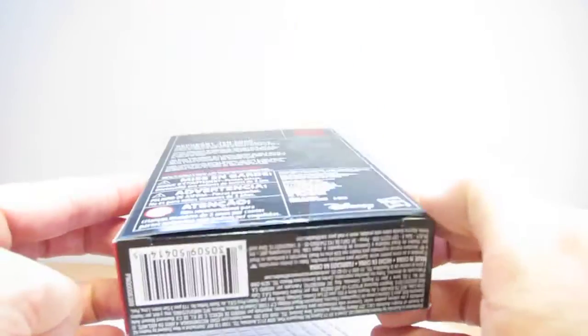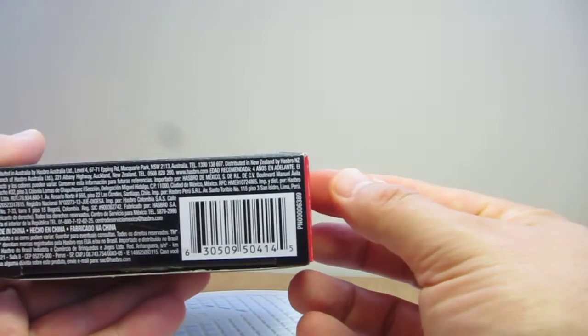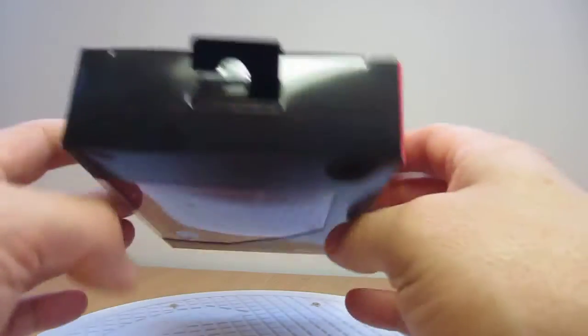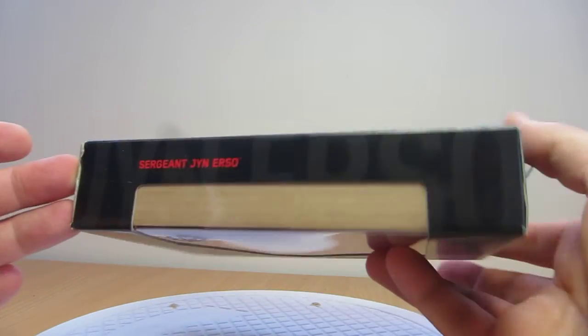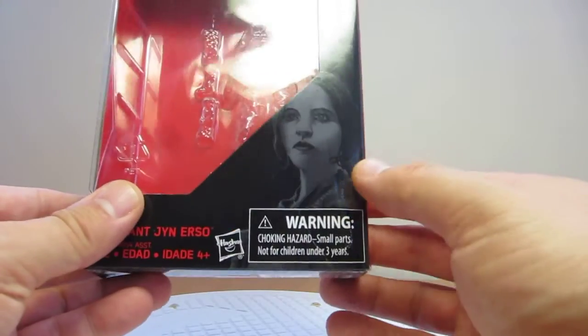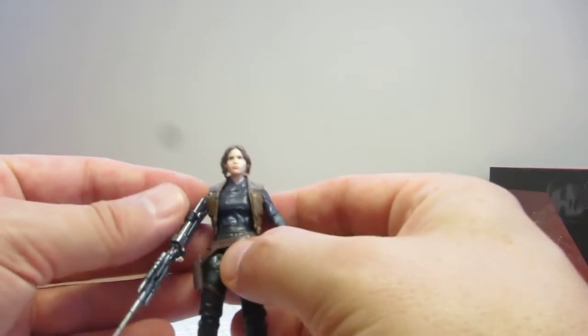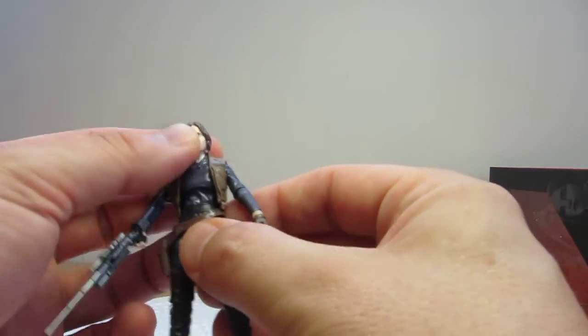For those that need to know it, there's the UPC. And up at the top it's blank. Sergeant Jyn Erso on the side, and that's the packaging.